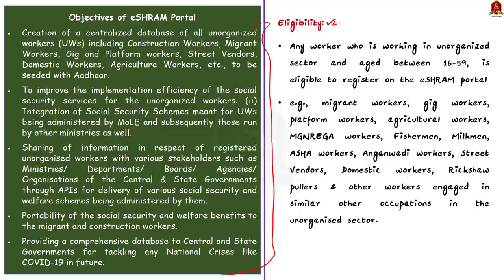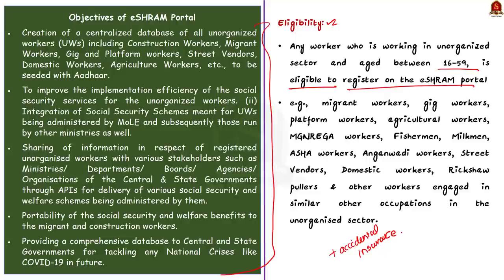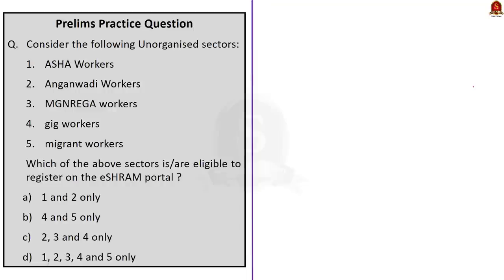Getting registered on the eShram portal comes with the additional benefit of accidental insurance. If a registered worker meets with an accident, they are eligible for ₹2 lakh on death or permanent disability and ₹1 lakh on partial disability. Any worker in the unorganized sector aged between 16 to 59 is eligible to register. Examples include migrant workers, gig workers, platform workers, agriculture workers, MNREGA workers, fishermen, milkmen, Asha workers, Anganwadi workers, street vendors, domestic workers, rickshaw pullers and others in similar unorganized sector occupations. In this discussion we saw about the eShram portal, its objectives, registration process, and eligibility factors.